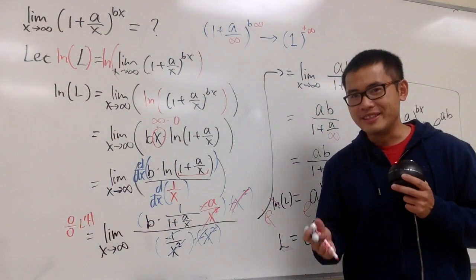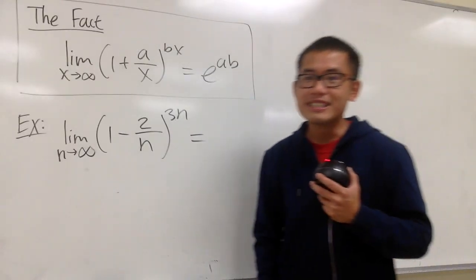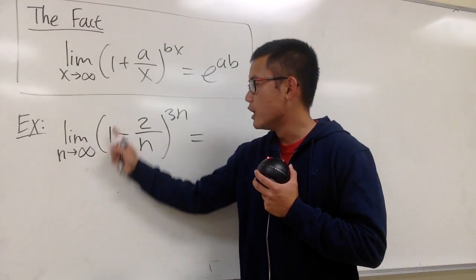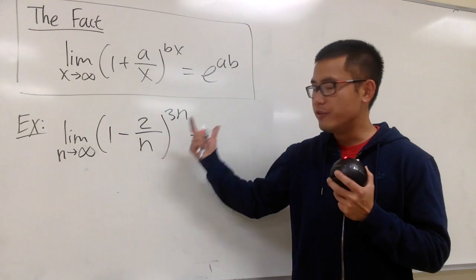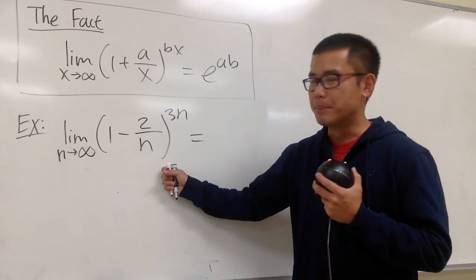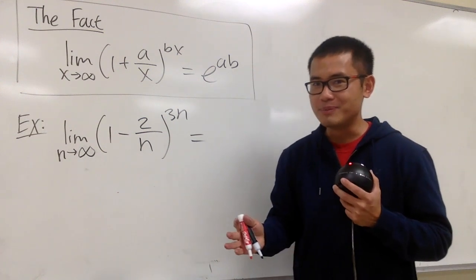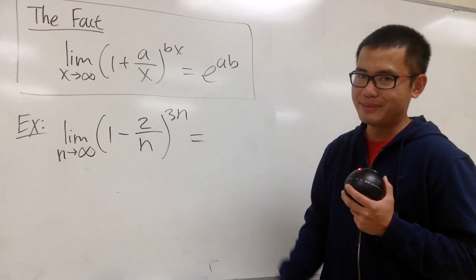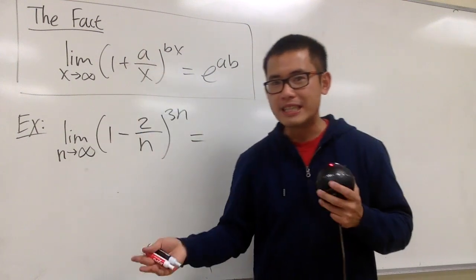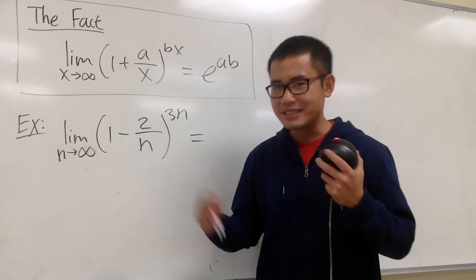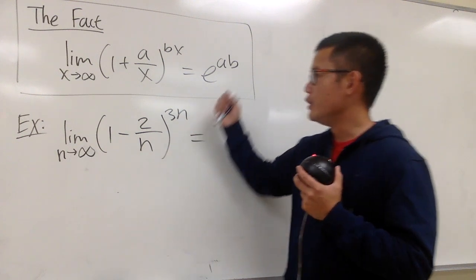Let me show you an example of how to use the fact quickly. Suppose we want the limit as n goes to infinity of (1 minus 2/n)^(3n). If the question asks you to show all steps, repeat all the algebra, calculus, and L'Hôpital's rule work we just did. But if you just want the value quickly, utilize the fact.